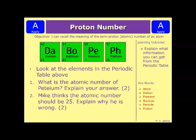Okay, let's have a look at an example question then. This one says: look at the elements in the periodic table above. As you can see, these aren't real elements, but it gets the point across. So we have davium, bobium, petium, and philium. The first question is: what is the atomic number of petium? And explain your answer.